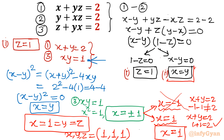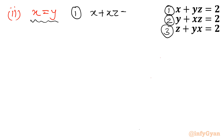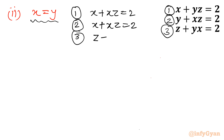Now I am going to consider case 2, from which we will get one more solution. Case 2: x equal to y. Putting x equal to y into the system: equation 1 becomes x plus xz equal to 2. Equation 2 gives the same. Equation 3 becomes z plus x squared equal to 2. So we ultimately have two equations to solve.